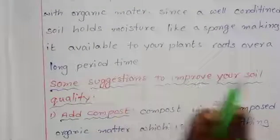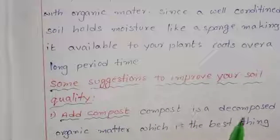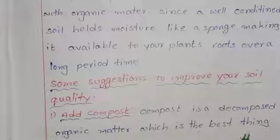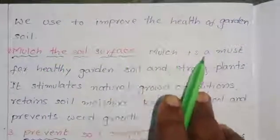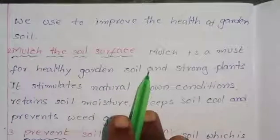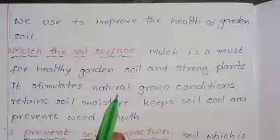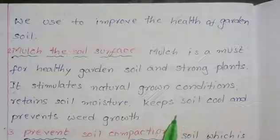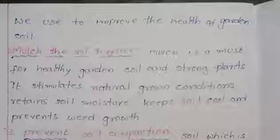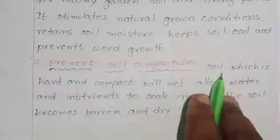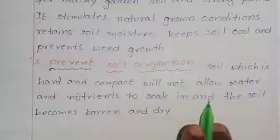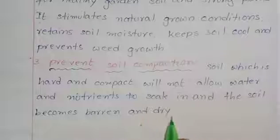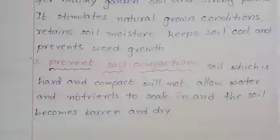Suggestions to improve soil quality: Add compost — compost is decomposed organic matter, which is the best thing to use to improve the health of garden soil. Mulch the soil surface — mulch is a must for healthy garden soil and strong plants; it retains soil moisture, keeps soil cool, and prevents weed growth. Prevent soil compaction — soil which is hard and compact will not allow water and nutrients to soak in, and the soil becomes barren and dry.